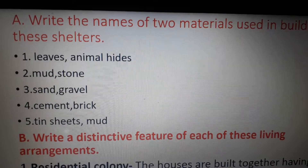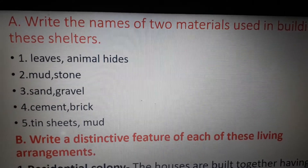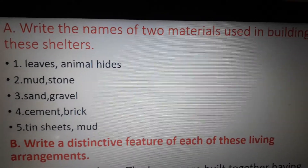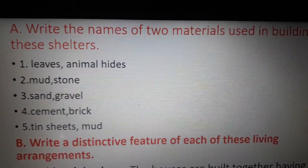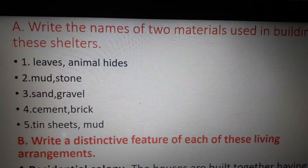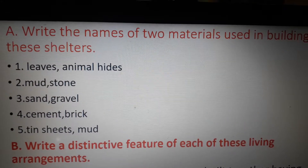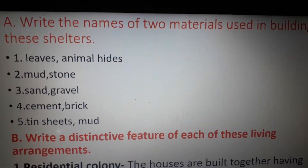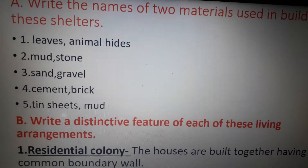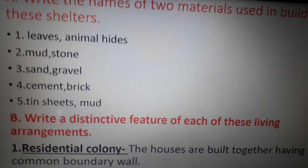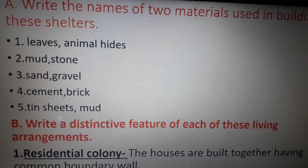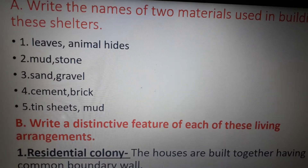Number A: write the names of two materials used in building these shelters. First one, shelter of the early man — answer: leaves or animal hides. Number two, kaccha house — answer: mud and stone.